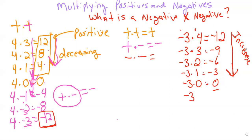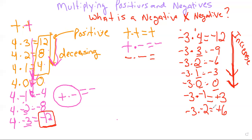We're going to jump over zero and go towards the positives. Watch: 4, 3, 2, 1, 0 — what's next? Negative three times negative one. We've increased to zero, and negative three times negative one is positive three because we're just following the pattern. Negative three times negative two is positive six. And negative three times negative three is positive nine. So negative times a negative gives us positive answers, as proven by following the pattern.